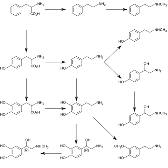Catecholamines have the distinct structure of a benzene ring with two hydroxyl groups, an intermediate ethyl chain, and a terminal amine group. Phenylethanolamines such as norepinephrine have a hydroxyl group on the ethyl chain.